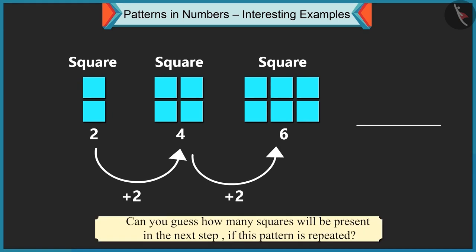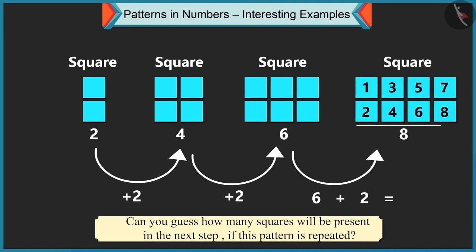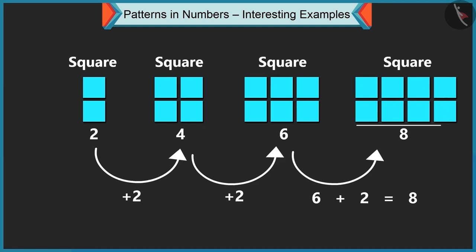Can you guess how many squares will be present in the next step, if this pattern is repeated? Currently, the pattern has six squares. Adding two more squares, seven and eight. This means, there will be eight squares in the next step.